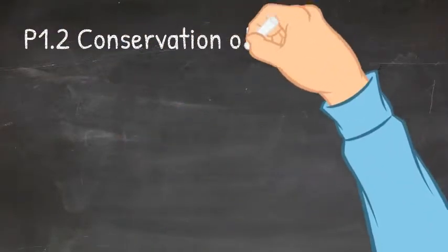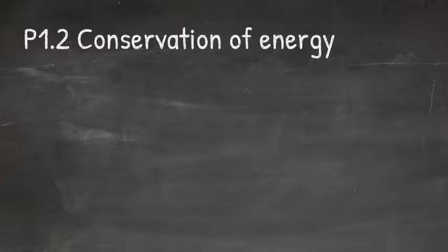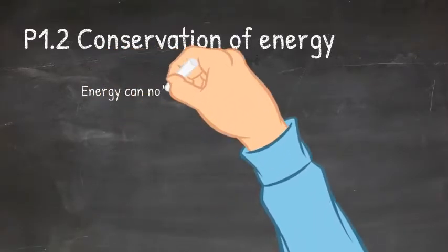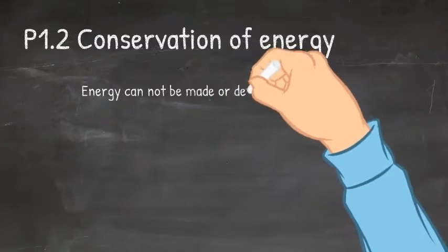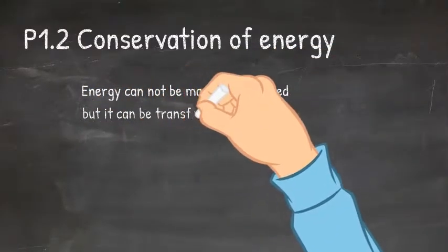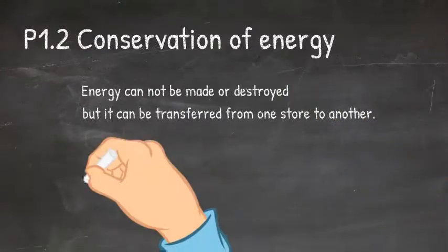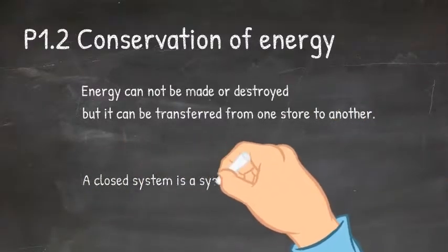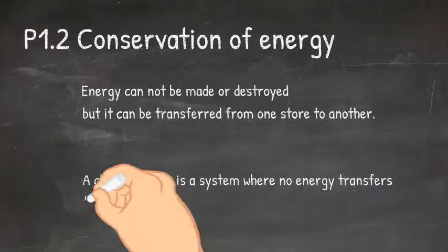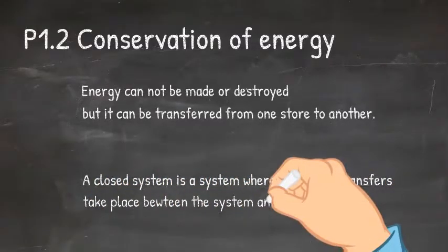Today we are talking about conservation of energy. Conservation of energy states that energy cannot be made or destroyed, but importantly it can be transferred from one energy store to another. In this topic you might hear about a closed system. A closed system is simply a machine or number of objects where there is no energy transferred to or from the surroundings.